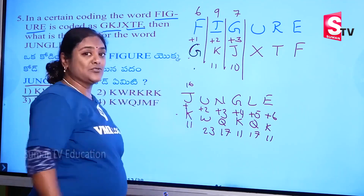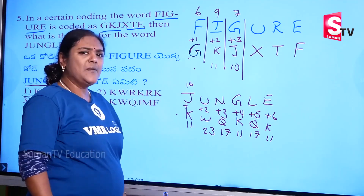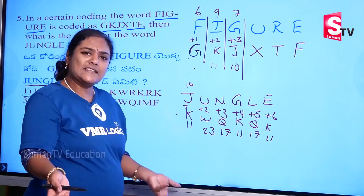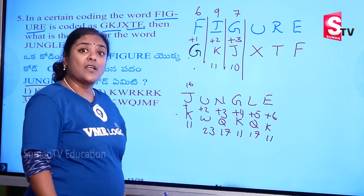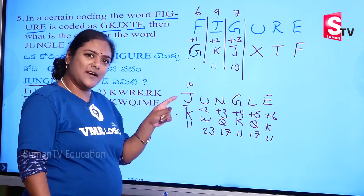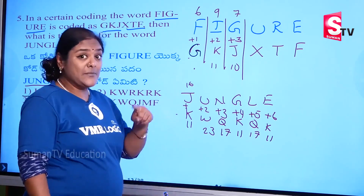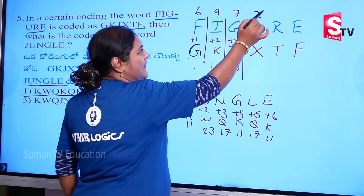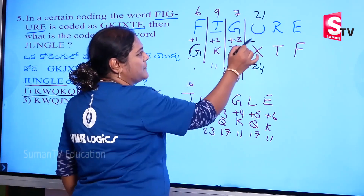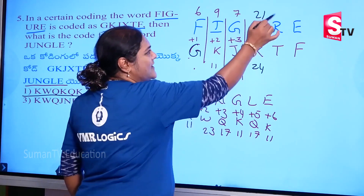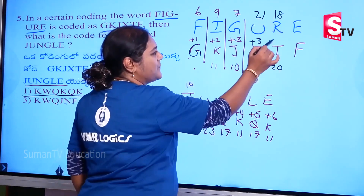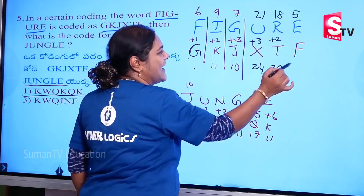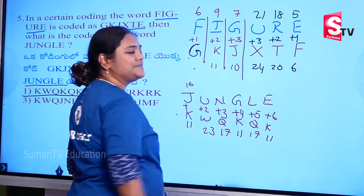Why do we explain? If you want to take a 3, you should draw it. 21, 24 — plus 3. 18, 20 — plus 2. 5 and 6 — plus 1.